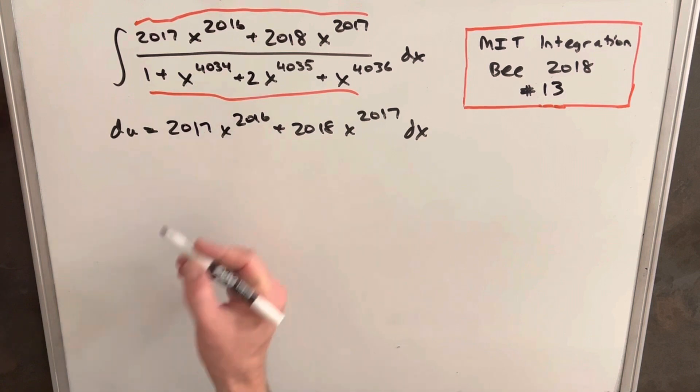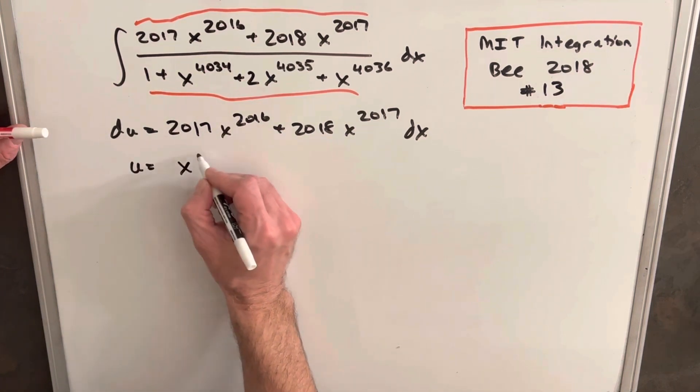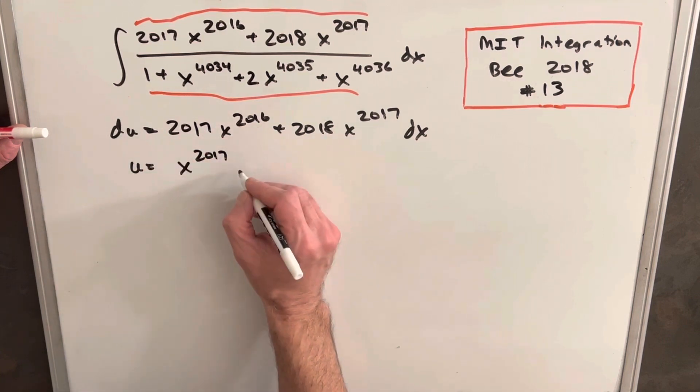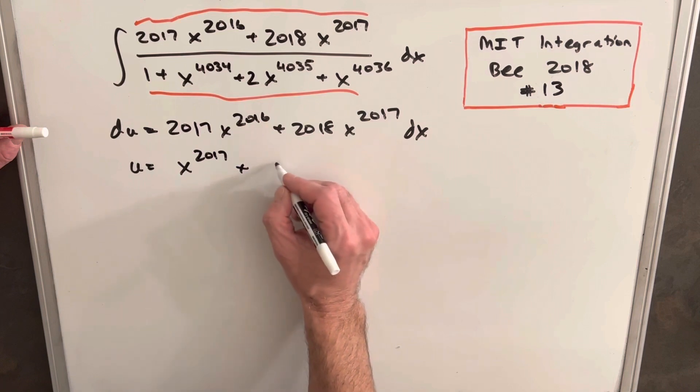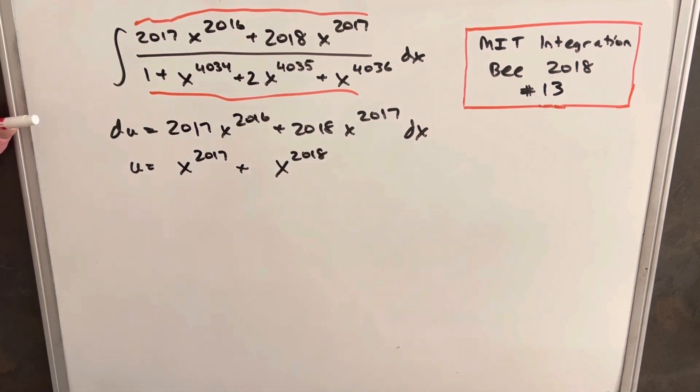And then we actually could just integrate this to get our u value. So for this first term we're going to have x to the 2017 just adding one to that exponent and dividing by 2017. And then for our second term we're going to have x to the 2018. No plus c this time, we're going to leave that off because we're setting our u.